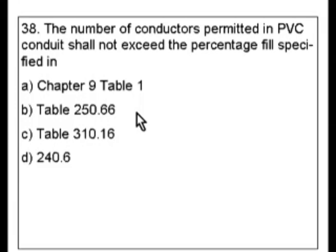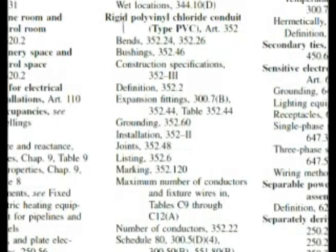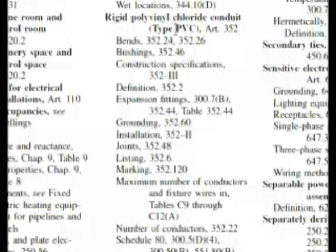Now let's suppose that we've come back to this. The obvious place to go is PVC. PVC stands for polyvinyl chloride conduit. However, if you went to P in the index, you might get lost because the real name is rigid PVC. So we have to look for rigid polyvinyl chloride conduit. Let's look at that in the index.